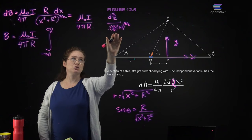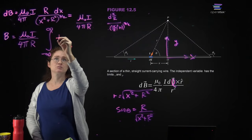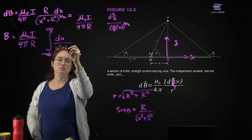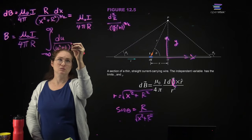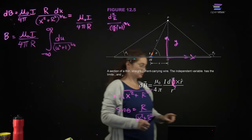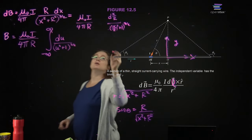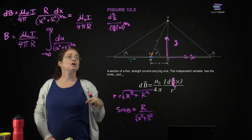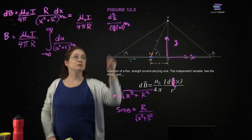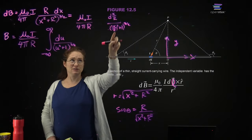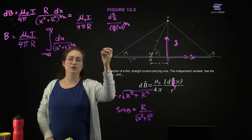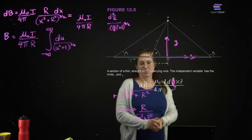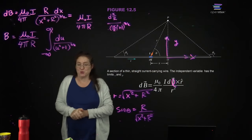Now I can change my variables. I have called u equals X over R, and then du equals DX over R, and my u's are just in there. Now I need to do this integral.